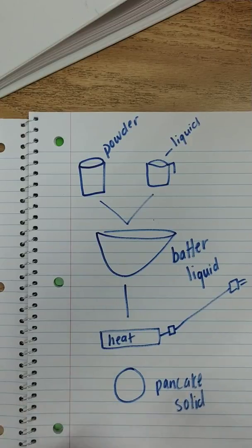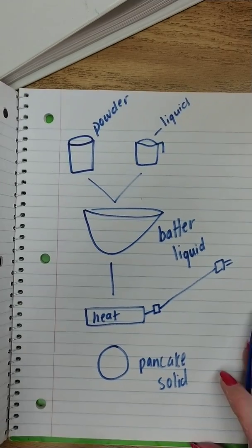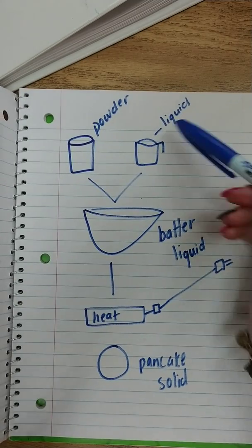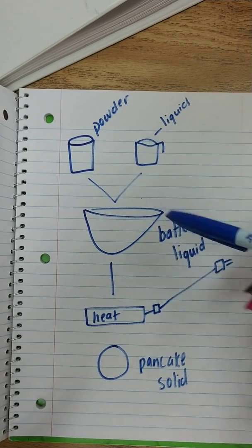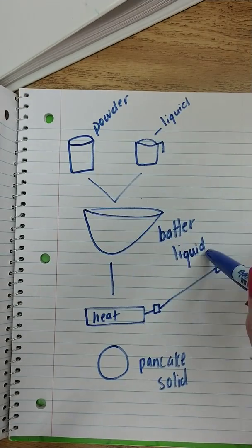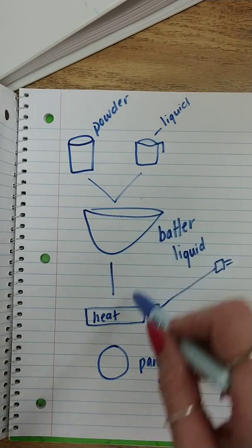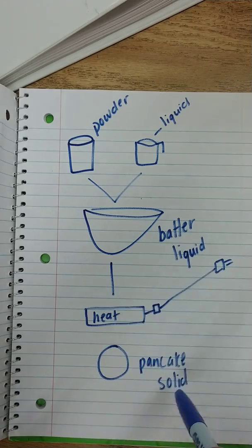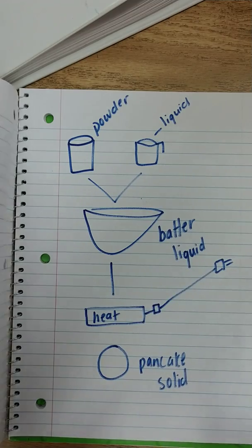So today what we learned about is how matter can change when you apply different things to it. We applied a liquid to the powder and it became a liquid. We applied heat to the liquid and it became a solid.